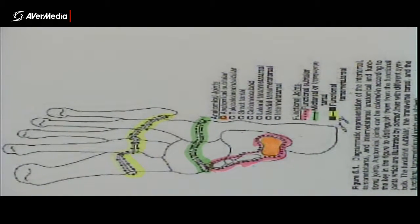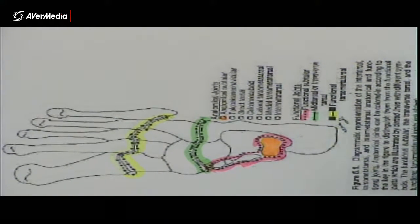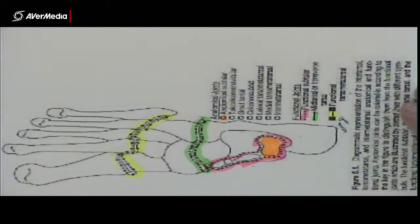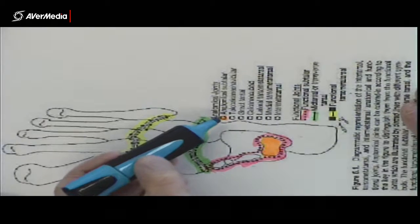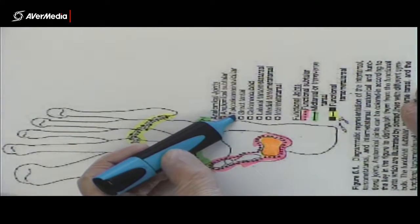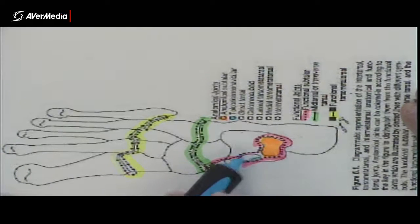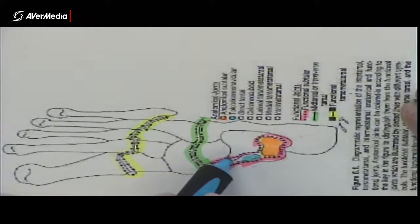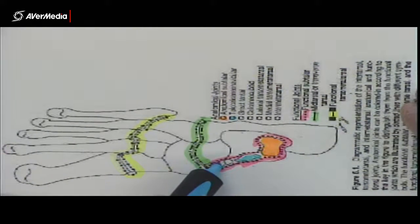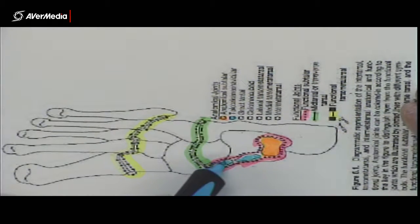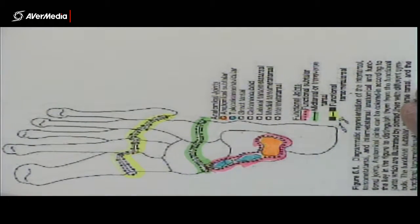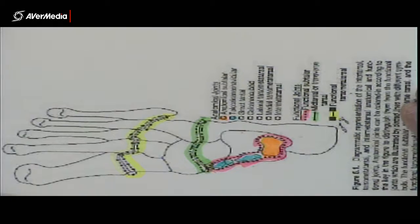Then in front of that, we have another couple of facets or two pairs of facets and they're part of the talo calcaneo navicular joint. So these two facets here, this one here on the talus and calcaneus. So there'll be one on the talus, one on the calcaneus and another one here, another pair of facets here. Those ones there are part of the talo calcaneo navicular joint.